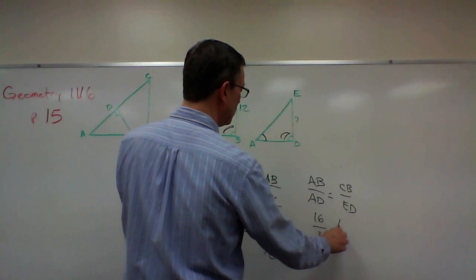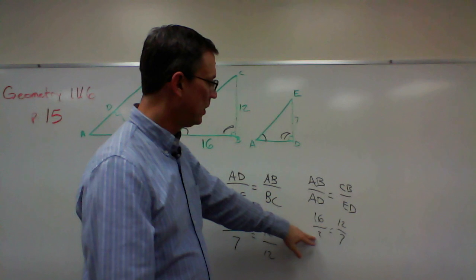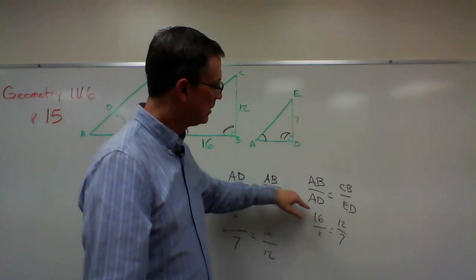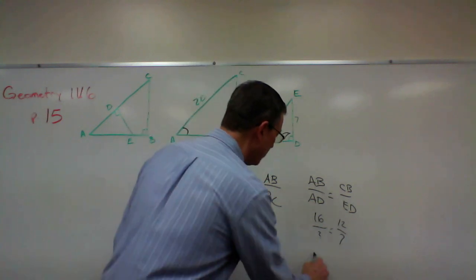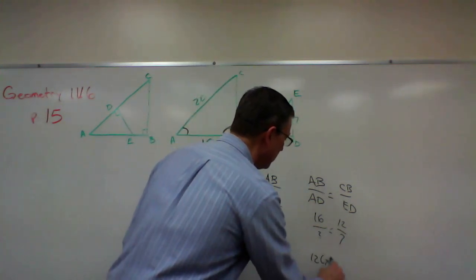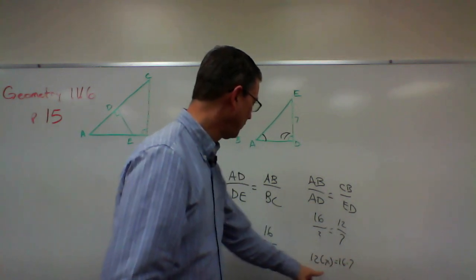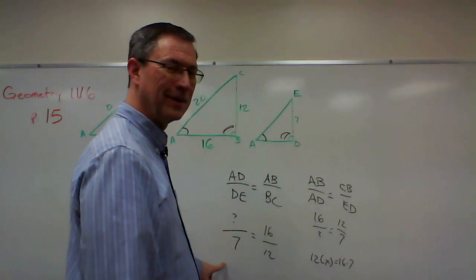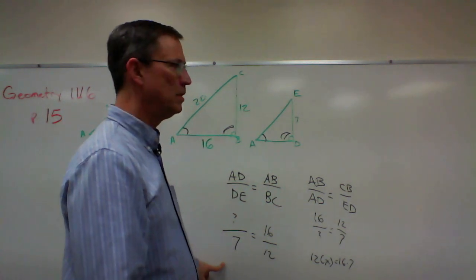Well, again, to solve for the unknown, I would multiply 16 times 7 equals 12 times the unknown. I'll call it X. 16 times 7 equals 12 times X. Same thing that we got here.